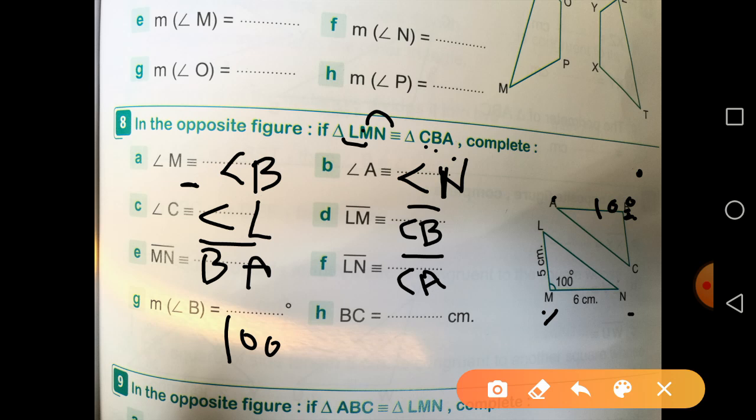PC equal to blank centimeters. So we look here: PC equal to ML. Where is ML? 5 centimeters. So PC equals 5 centimeters.